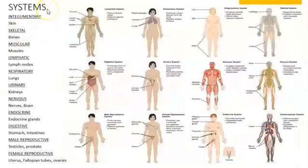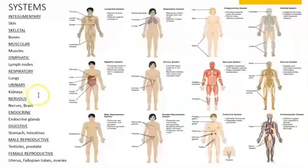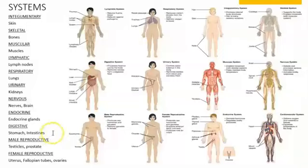The next topic is organ systems. Some of the systems in our body include the integumentary system, whose main organ is the skin; the skeletal system; and the lymphatic system, which includes organs such as the lymph nodes. The respiratory system contains the lungs; the urinary system contains the kidneys; the nervous system includes the nerves and the brain; the endocrine system involves the glands; and the digestive system includes the stomach and intestines. The male reproductive system includes the testicles and prostate, while the female reproductive system includes the uterus, fallopian tubes, and ovaries.